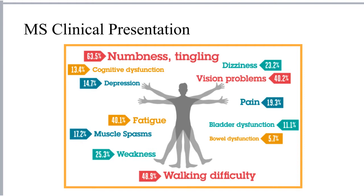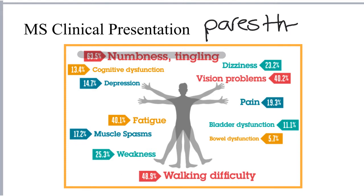...an episode of paresthesia. Paresthesias are numbness or tingling in the extremities, fatigue, diplopia — which is double vision or other vision problems — disequilibrium or walking difficulty, and also sometimes bladder dysfunction.